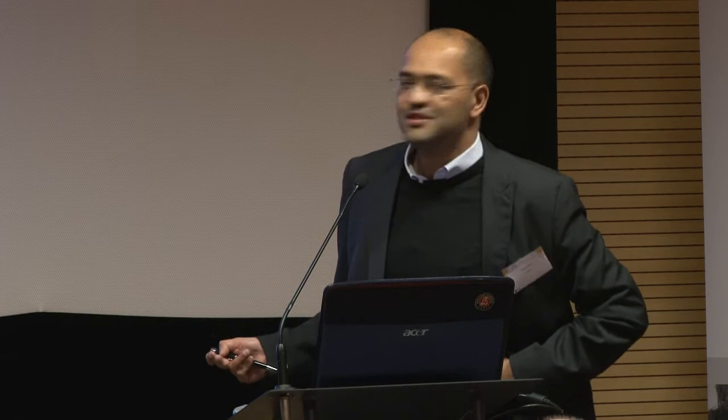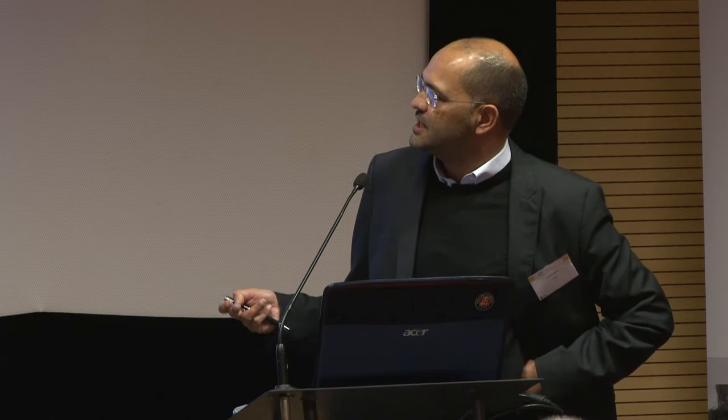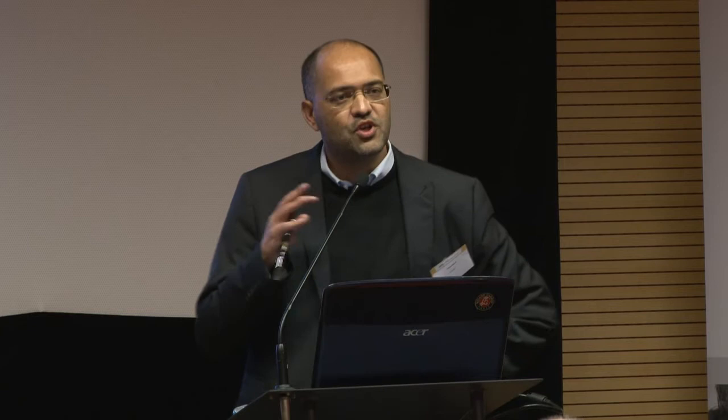What you have here is a sample of upper middle income countries. Apologies, there's no Poland here. South Africa's unemployment rate has hovered since democracy - since apartheid ended - between 22 and 27 percent. The latest rate is about 25 percent, which is far higher than any other comparator upper middle income country. The closest is Serbia at about 15 to 16 percent, but the upper middle income country average is half that of South Africa. So this is a labor market first and foremost defined by one of the highest unemployment rates you're likely to see in comparator economies.